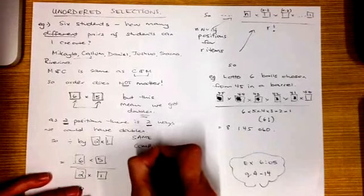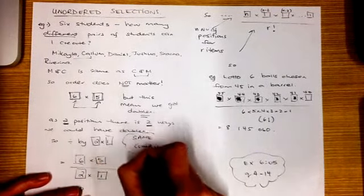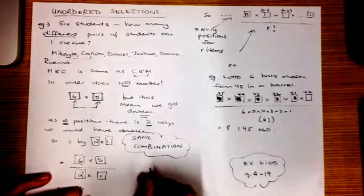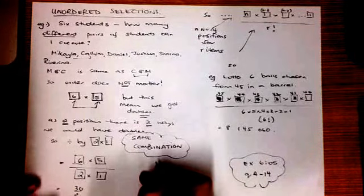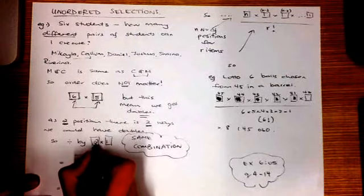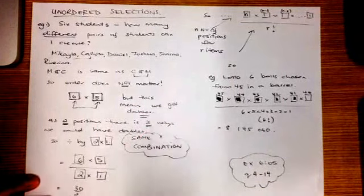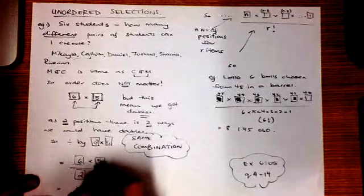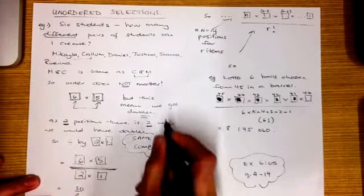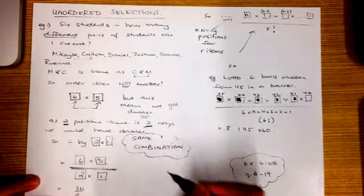Remember, it doesn't matter if Callum is chosen first or Michaela is chosen first — we end up with the same combination of people. So in this case, we're going to divide by the two positions: that's two times one, the same multiplication principle that we've applied before. So we've got six times five, and we're dividing by the number of positions, because that tells us the number of times that things will be the same.